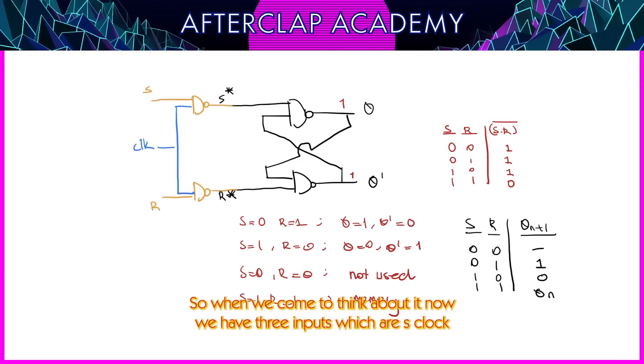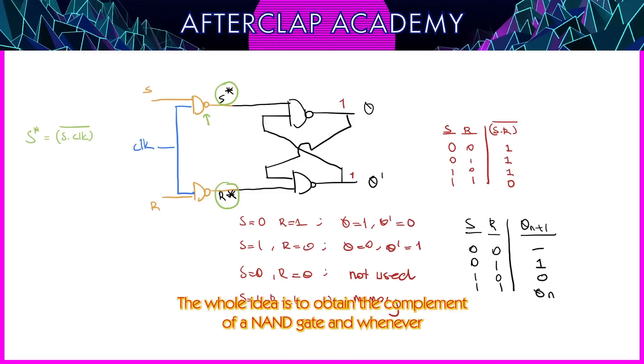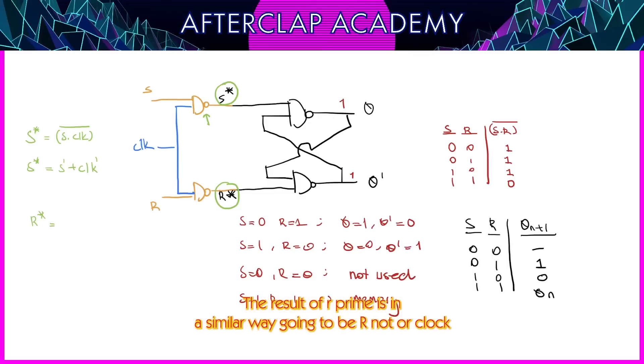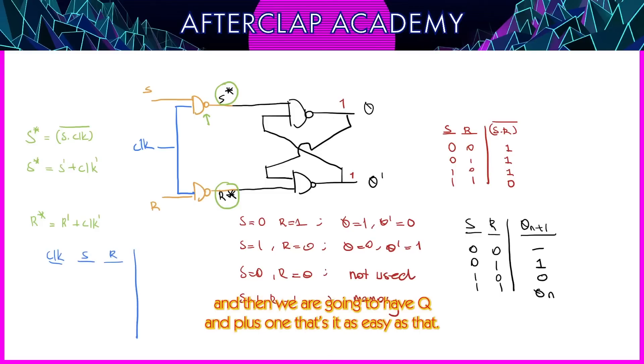When we come to think about it, now we have three inputs, which are S, clock and R. So by considering these inputs, we are also able to find out the expression for S prime and also R prime. Let us check that. S prime is actually going to be equal to the output of a NAND gate in here. The whole idea is to obtain the complement of an AND gate. And whenever we use De Morgan's law in here, we're going to have S complement or clock complement. This is a result of S prime. And let us also check out the result of R prime. The result of R prime is in a similar way going to be R complement or clock complement. Now, let us construct the truth table. We're going to have clock, that's the first element, then we're going to have S, then we're going to have R, and then we're going to have Q n plus 1. That's it.